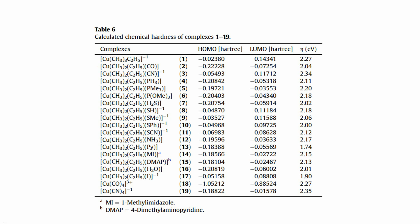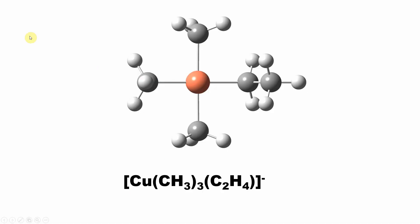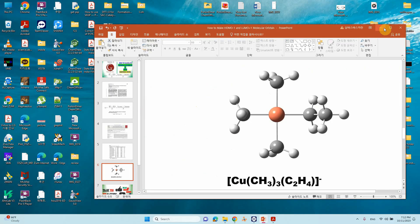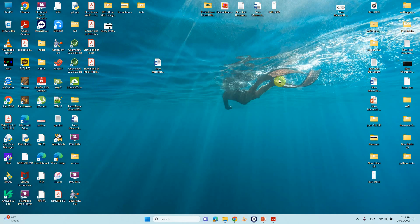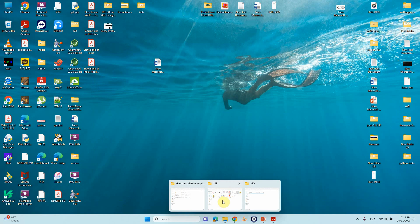A low hardness value indicates that the system is thermally unstable compared to the tetraalkyl copper complex. The system we are working with is a copper trimethyl and ethyl complex — specifically a copper trimethyl monoethyl complex with an overall charge of minus 1 and a copper 3+ oxidation state. I will tell you step by step how to calculate the chemical hardness.